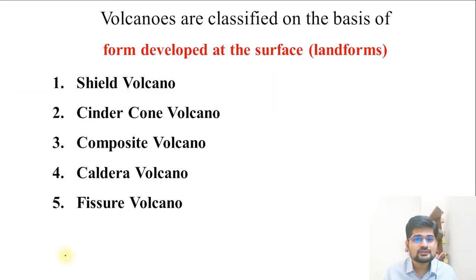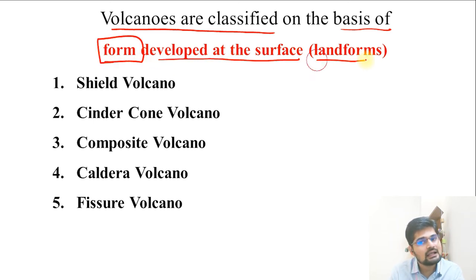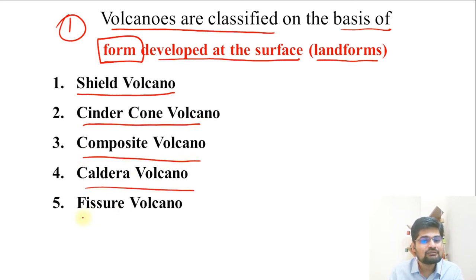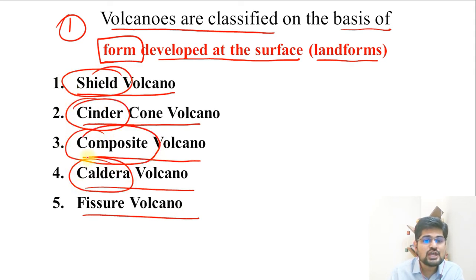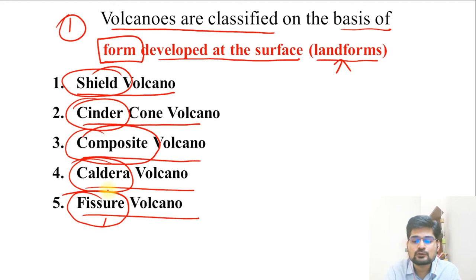Now it's time to study the classification of volcanoes and landforms. Volcanoes are classified on the basis of the form developed on the surface. The five types are: shield volcano, cinder cone, composite volcano, caldera volcano, and fissure volcano. These represent the morphology and features — a landform classification.